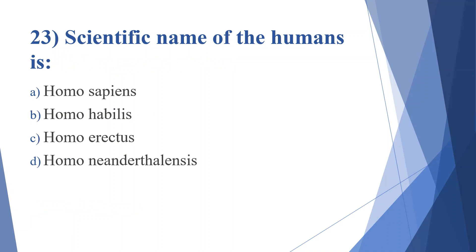Twenty-third question: scientific name of the human is. Option A: Homo sapiens. Option B: Homo habilis. Option C: Homo erectus. Option D: Homo neanderthalensis. Answer is option A, Homo sapiens.